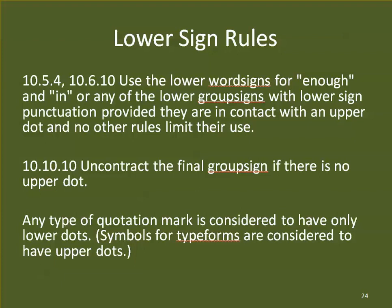There are some overarching lower sign rules. Use the lower word signs for IN and EN, or any of the lower group signs, with lower-sign punctuation, provided they are in contact with an upper dot and no other rules limit their use. A lower group sign can be in contact with an upper dot — that's fine — but if another rule applies, that supersedes this overarching rule. Uncontract the final group sign if there's no upper dot. Any type of quotation mark is considered to have only lower dots. And for the record, type forms like italics have upper dots and count as such, even though they're indicators not present in print.